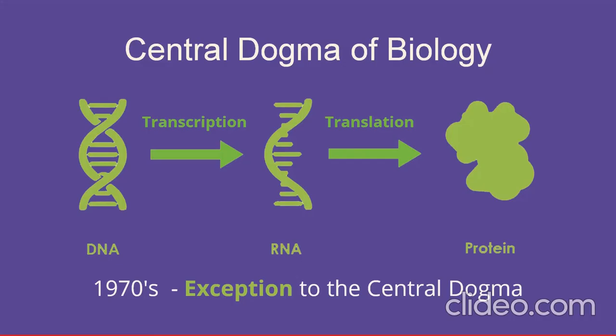Starting with the central dogma of biology, in 1958 Francis Crick put forward the idea that genetic flow is unidirectional and happens in only one direction. That means DNA creates RNA by transcription and RNA creates proteins by translation.